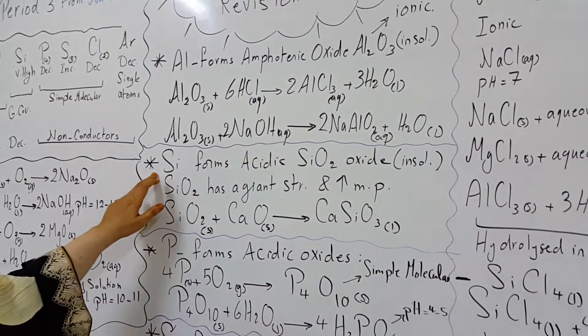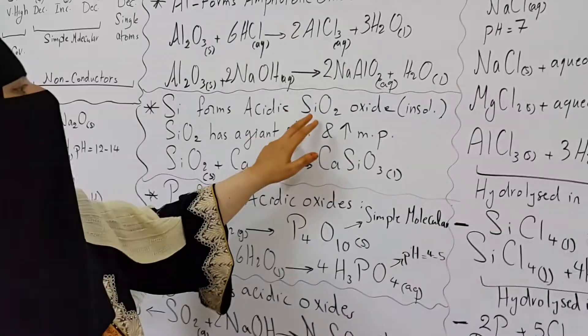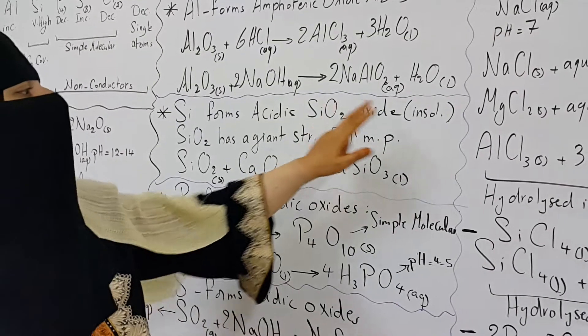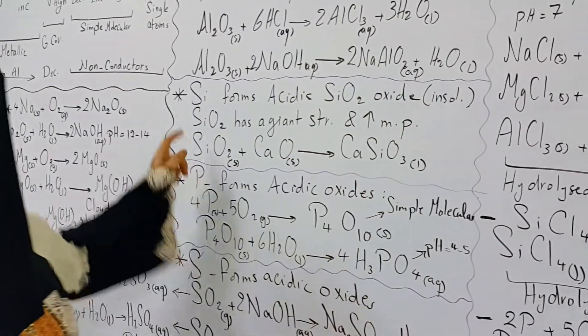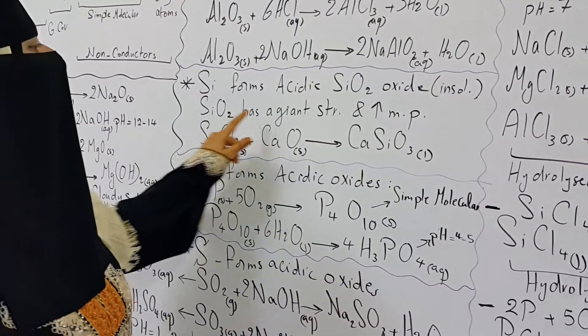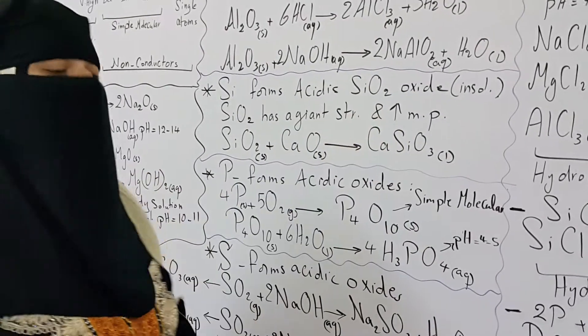Now for silicon. Silicon forms an acidic oxide, silicon dioxide (SiO2). And this oxide is insoluble. And this oxide has a giant structure of a high melting point.